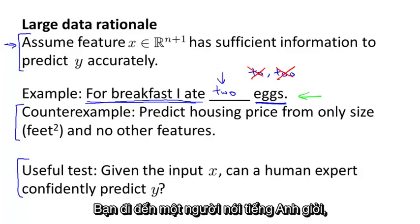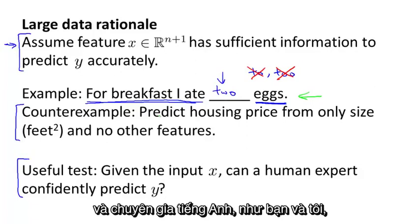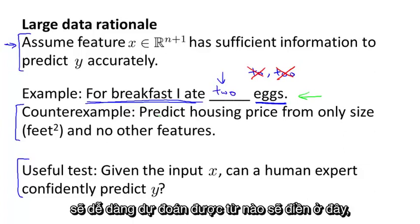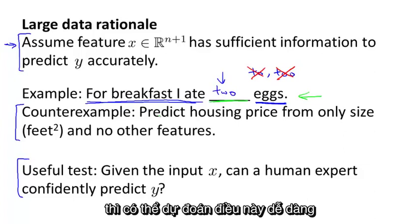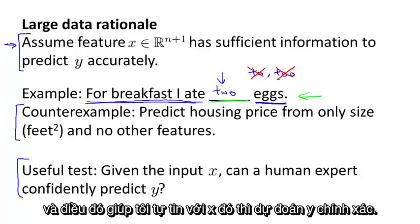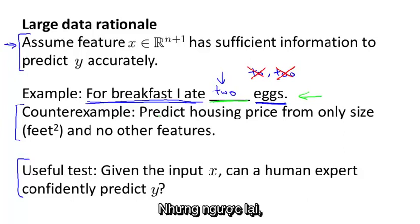For this first example, if we go to an expert human English speaker, like you go to someone that speaks English well, then the human expert in English, just really most people like you and me, would probably be able to predict what words should go in here. So a good English speaker can predict this well, and so this gives me confidence that x allows us to predict y accurately.